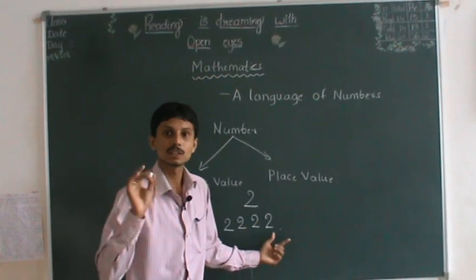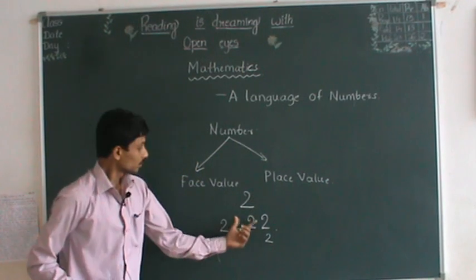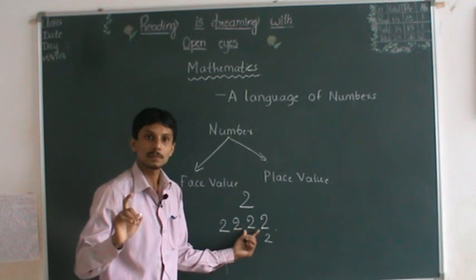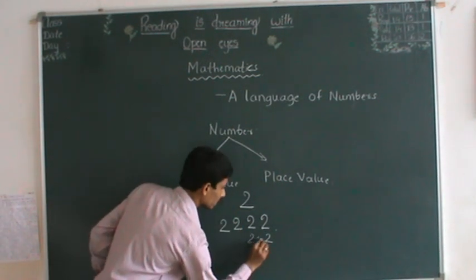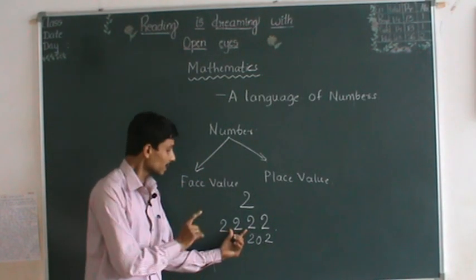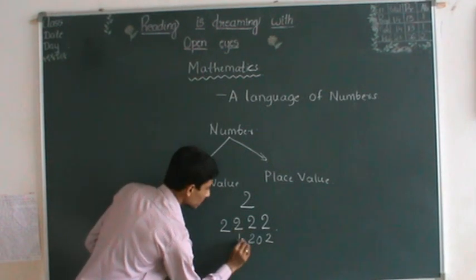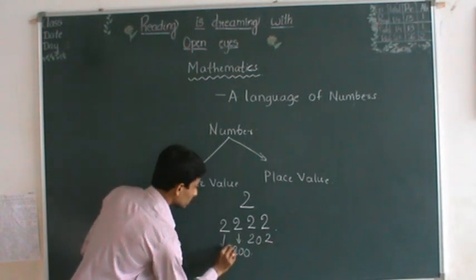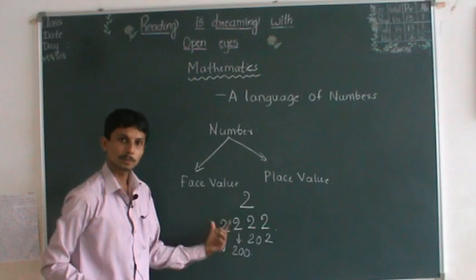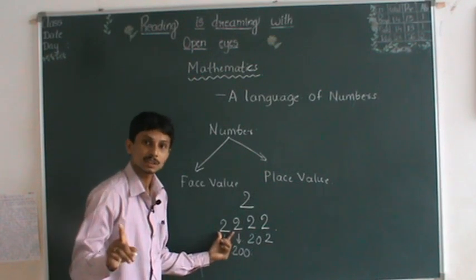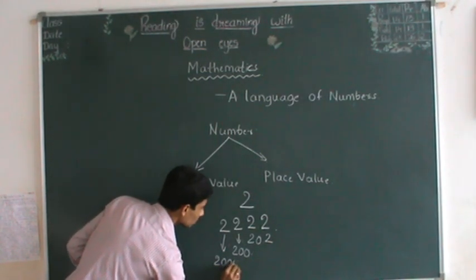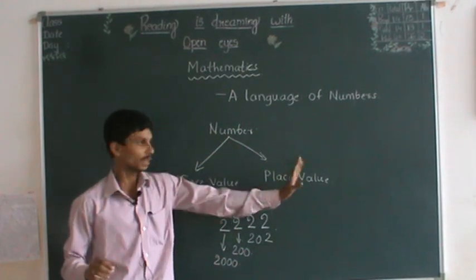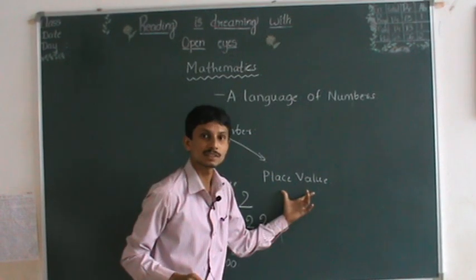The face value of the digit in the units place is 2. Now let us consider the 10th place — this 2 is in the tens place, so the place value of this digit is 20. This 2 is in the 100th place, so the place value of this 2 is 200. And this 2 is in the 1000th place, so the place value of this 2 is 2000. So from the value concern, we represent numbers in two ways: face value and place value.